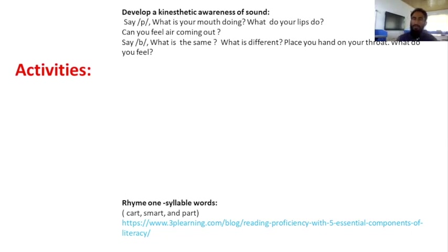You can then teach another phoneme like the 'b' sound and ask the student: What is the same between the 'p' sound and the 'b' sound? They will identify the difference — which part of the mouth is active while pronouncing each sound. You can also ask: Place your hand on your throat — do you feel any vibration? Is the sound voiced or voiceless? This way, we can develop kinesthetic awareness of sound.